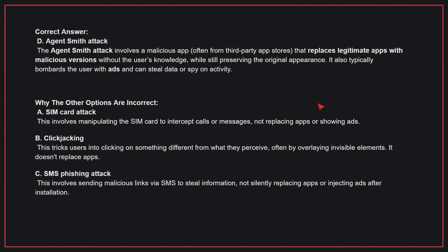Why the other options are incorrect: A — SIM card attack. This involves manipulating the SIM card to intercept calls or messages, not replacing apps or showing ads. B — Clickjacking. This tricks users into clicking on something different from what they perceive, often by overlaying invisible elements; it doesn't replace apps. C — SMS phishing attack. This involves sending malicious links via SMS to steal information, not silently replacing apps or injecting ads after installation. Therefore, the correct answer is D.